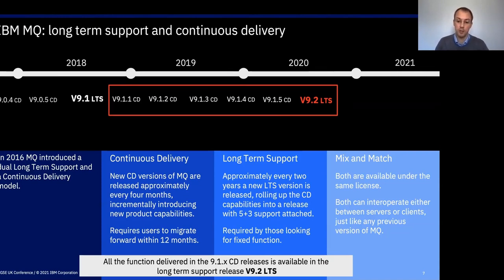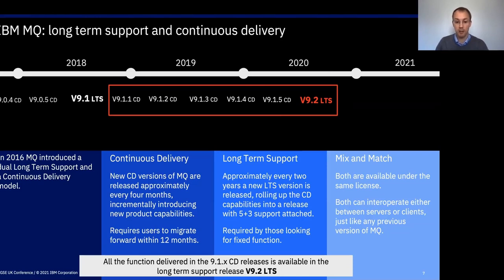It might be that you use the long-term support release for your main estate, but certain applications that you want to use new features for can adopt the CD releases and keep updating them. Then maybe when the functions are available in a new long-term support release, you switch those back, or maybe you continue to take further updates. You can definitely mix and match these — you do not have to have all your queue managers using one release or the other.